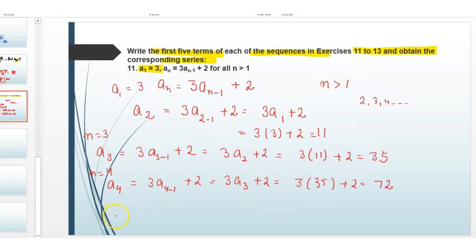Now n equals 5. a5 equals 3a(5-1) plus 2, which equals 3a4 plus 2, equals 3 times 72 plus 2. So 3 times 72 is 216, plus 2 equals 218.